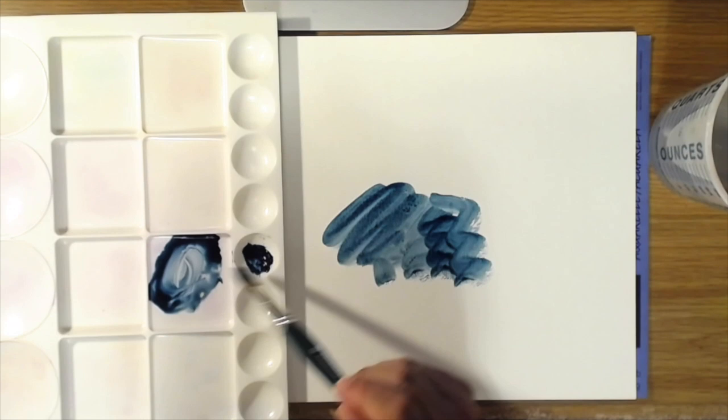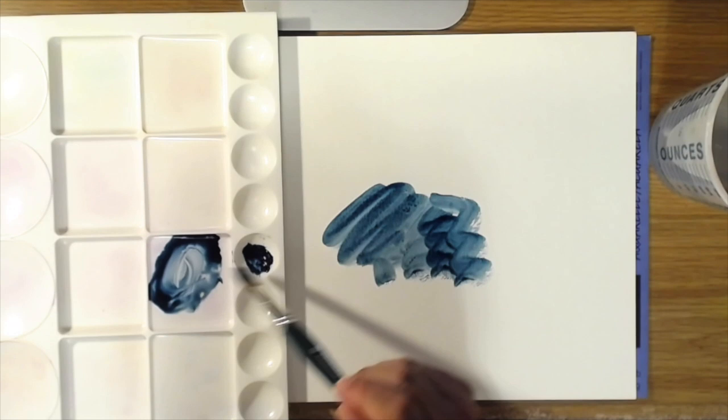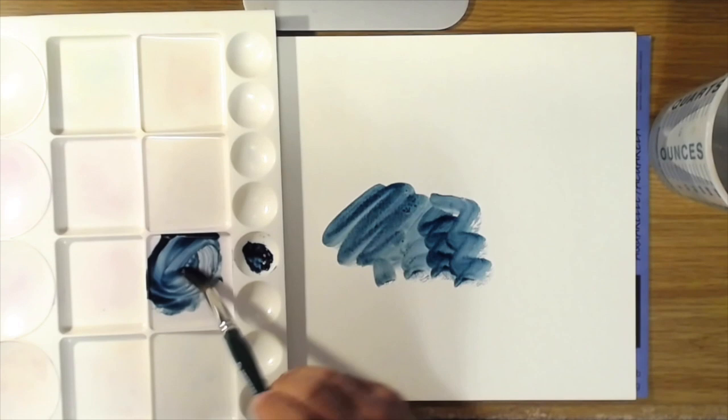It almost looks like you took phthalo blue and mixed a little tiny bit of green and a little tiny bit of black with it, and that would make a similar color to this Mayan blue.